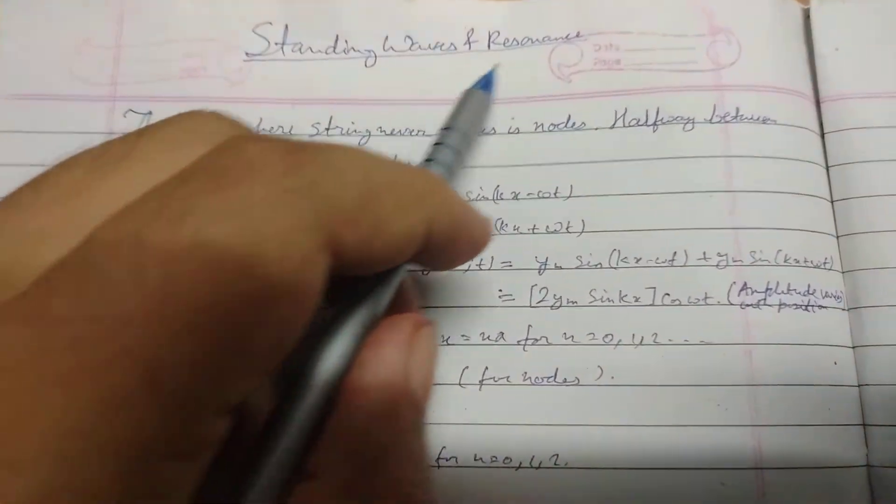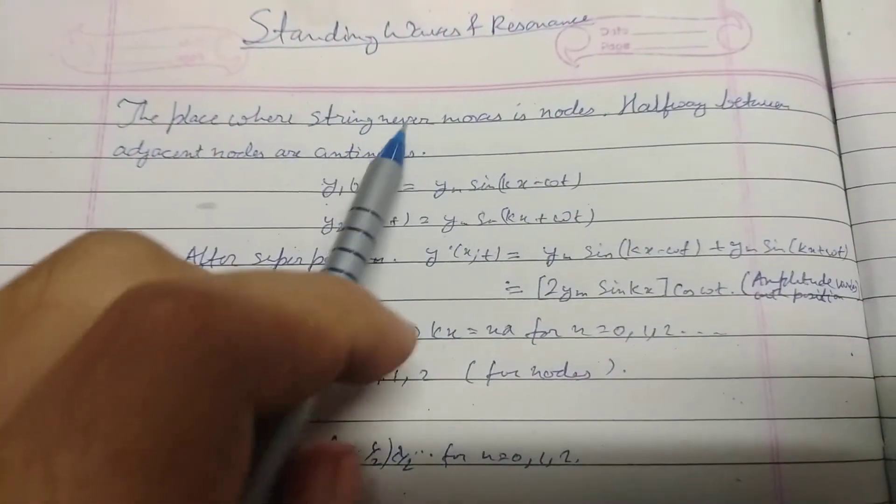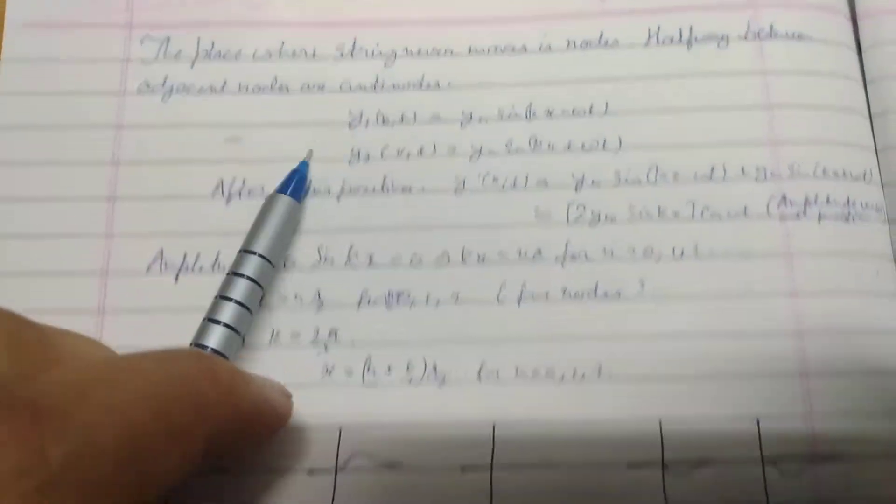Hi friends, today's topic is standing waves and resonance. The place where the string never moves is called nodes, and halfway between adjacent nodes are anti-nodes.